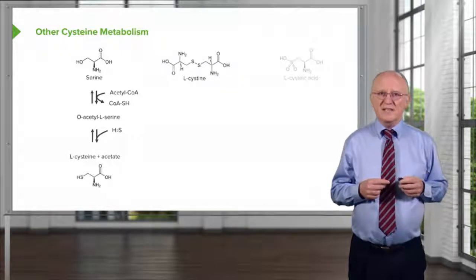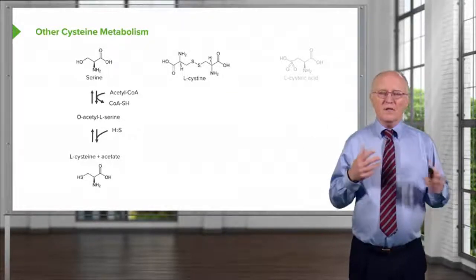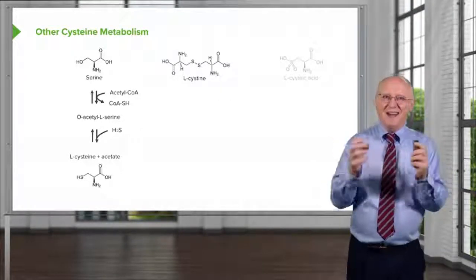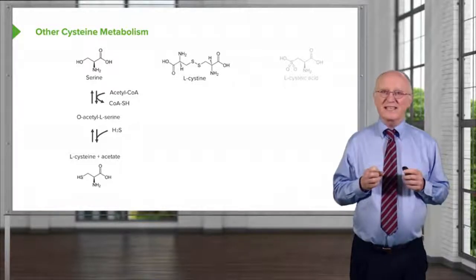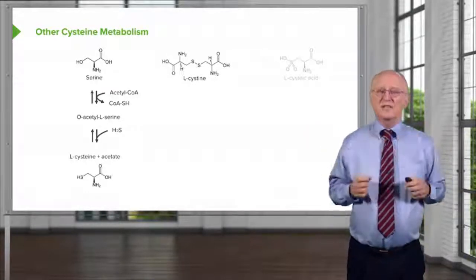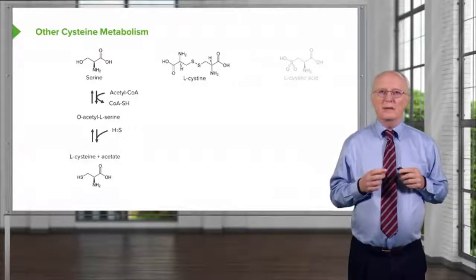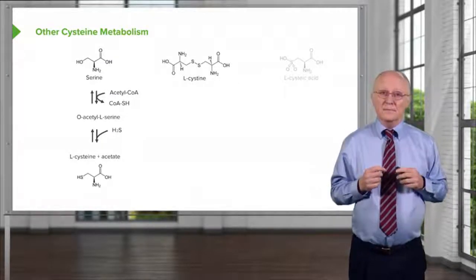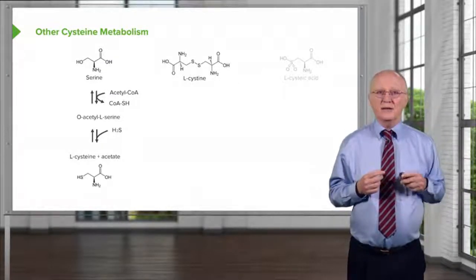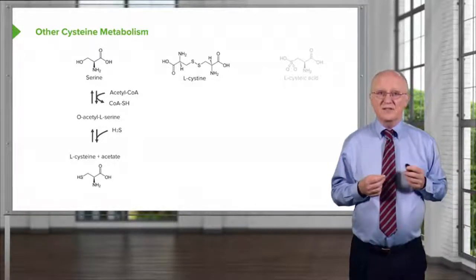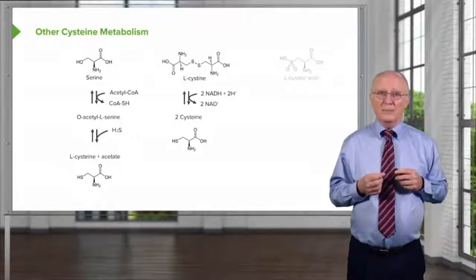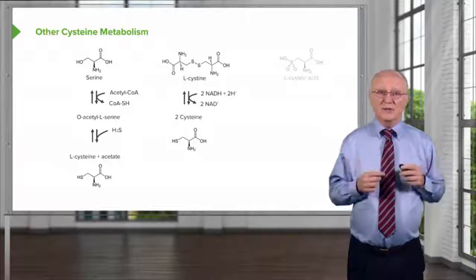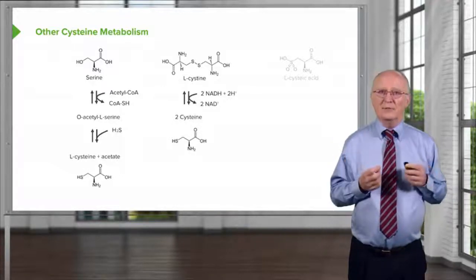A second way of making cysteine actually comes from proteins themselves. One of the things that cysteine can do in a protein is combine with another cysteine in a covalent bond to make this di-cysteine, called L-cystine, involving the joining of the two cysteines by a disulfide bond as shown in the middle of the molecule. When proteins are cleaved and they've had this bond occur in them, L-cystine is the product of the breakdown of the protein. Making cysteine from L-cystine simply involves breaking that bond through a reduction; the electrons come from NADH, producing two cysteines.